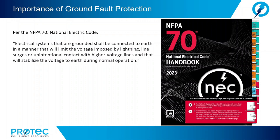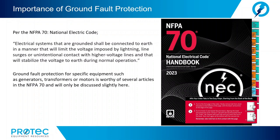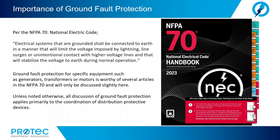Per NFPA 70, the National Electric Code, electrical systems that are grounded shall be connected to Earth in a manner that will limit voltage imposed by lightning, line surges, or unintentional contact with higher voltage lines, and that will stabilize the voltage to Earth during normal operation. Ground fault protection for specific equipment such as generators, transformers, or motors is worthy of several articles in NFPA 70. Unless noted otherwise, all discussions of ground fault protection apply primarily to the coordination of distribution protective devices.